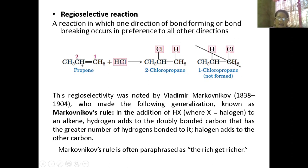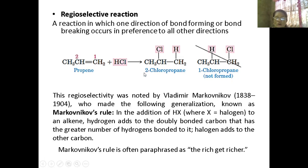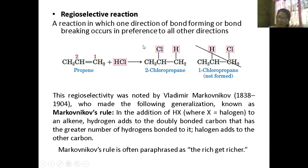For example, with HCl: which carbon has more hydrogens — carbon 1 or carbon 2? Carbon 1. Therefore, hydrogen attaches to carbon 1 (the richer one), and chlorine attaches to carbon 2 (the less hydrogen). You will form 2-chloropropane. According to Markovnikov's rule, hydrogen attaches where there are more hydrogens; the halogen — chlorine, bromine, iodine — attaches where there are fewer hydrogens. This is the major product.